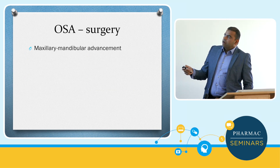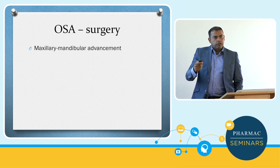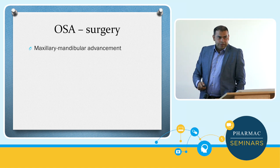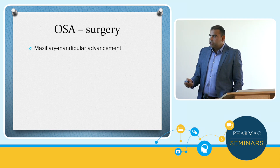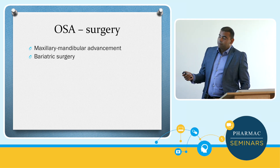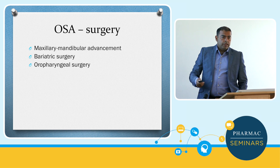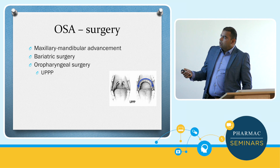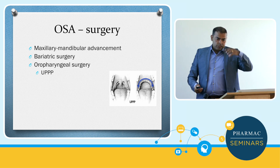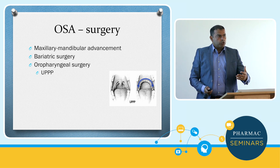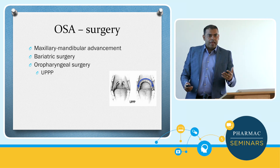Traditionally, maxillary-mandibular advancement is touted as the evidence-based accepted surgical alternative to CPAP. It is morbid — it's a big operation. Bariatric surgery is accepted as an alternative surgical treatment. Oropharyngeal surgery is gathering evidence with time. Traditionally, surgery that trimmed off part of the soft palate and uvula caused circumferential scarring which actually narrowed the oropharyngeal aperture over time, making things worse — that's where surgery gained ill repute in the past.